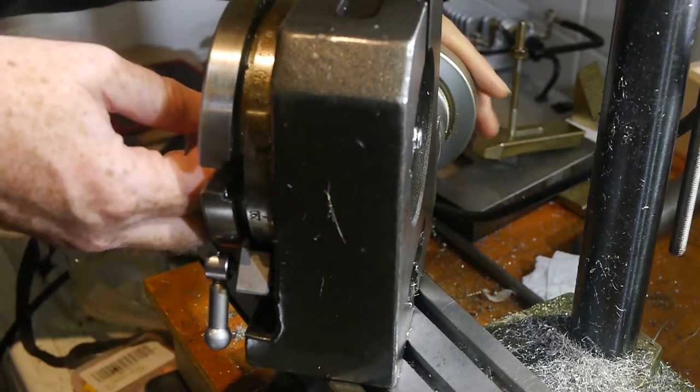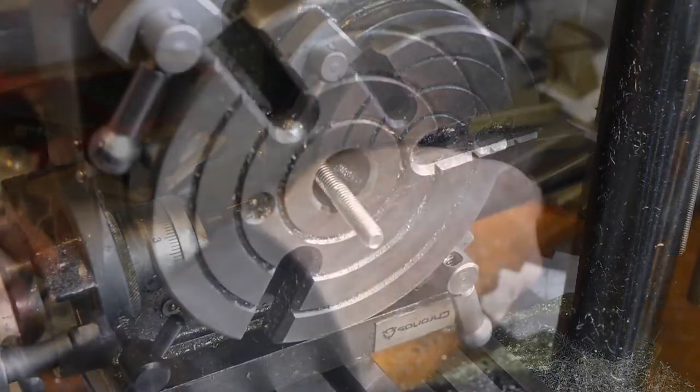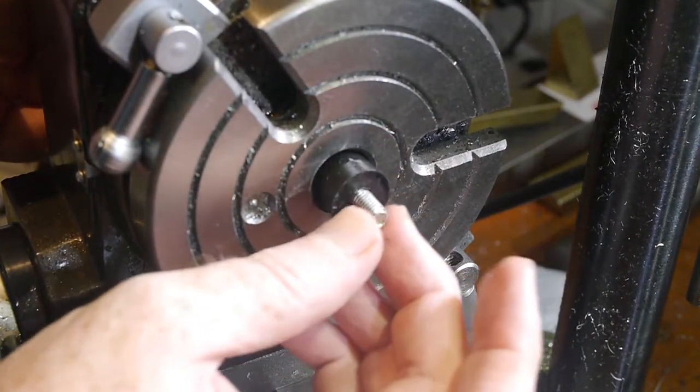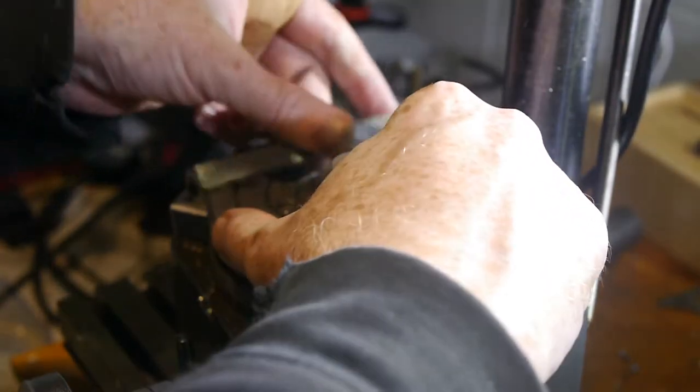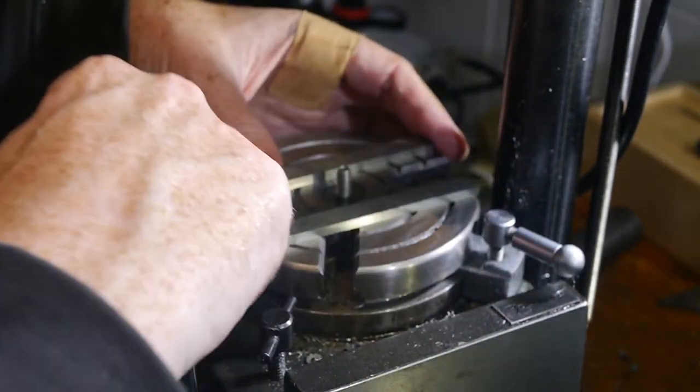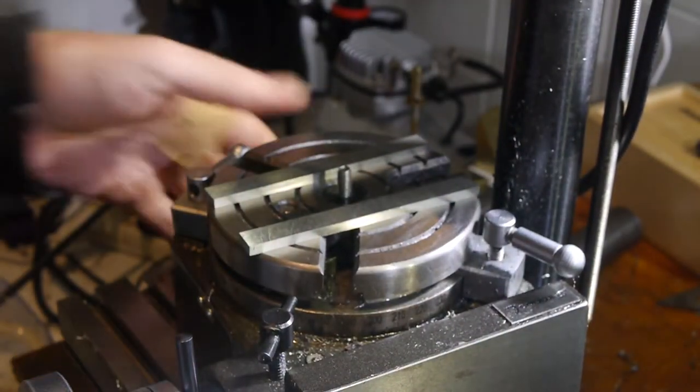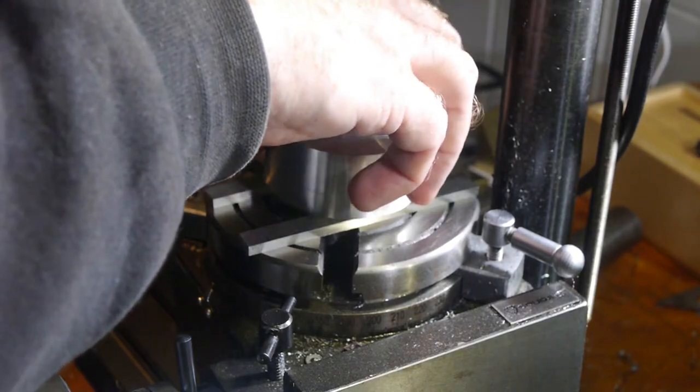I'd given up when using the small Proxxon indexing head as there wasn't enough room, and I'd assumed the problems with the larger rotary table would be worse. Maybe I could find a way to mount it on the cross table directly at the right angle, and avoid the need for a chuck by tapping a hole in the back of the part to take a drawbar similar to those I used in my faceplate series.